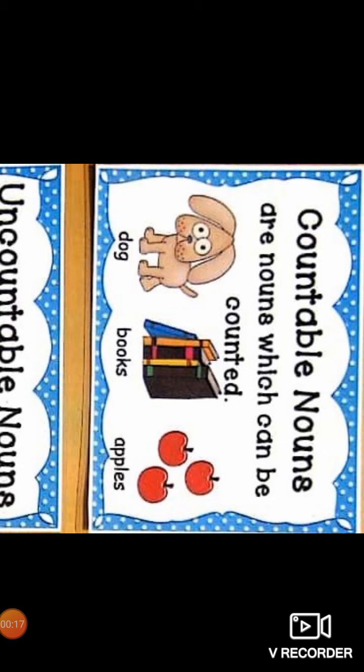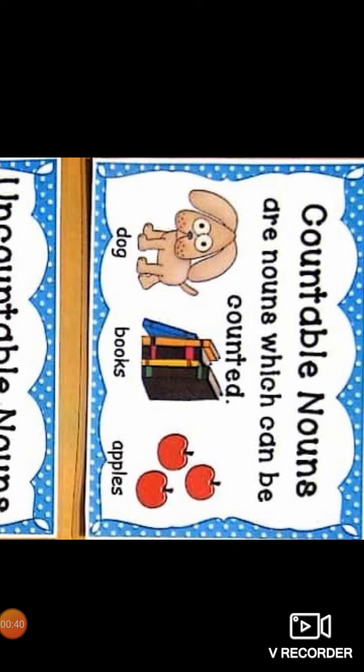We should know the meaning of countable nouns and uncountable nouns — you can understand by the names also. Countable means which can be counted, able to count. Uncountable nouns are those which are unable to count.